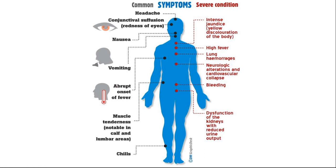Sometimes it shows some bleeding, and sometimes dysfunction of the kidney with reduced urine output. Here are the overall common and severe conditions shown for both diseases: streptobacillary and spirillary rat bite fever.